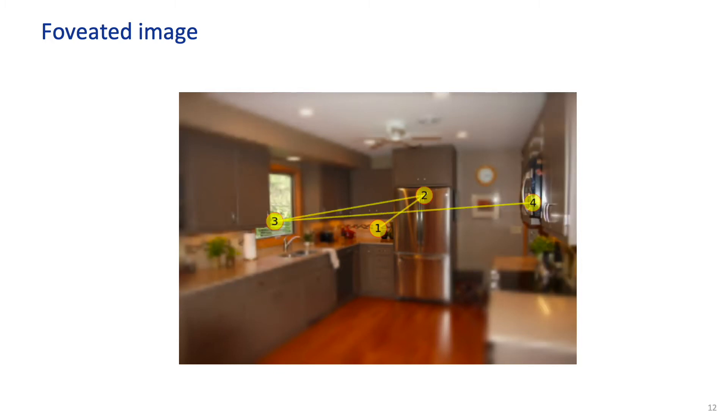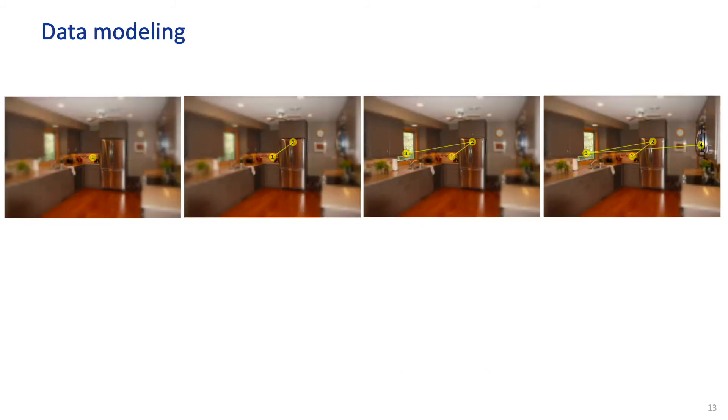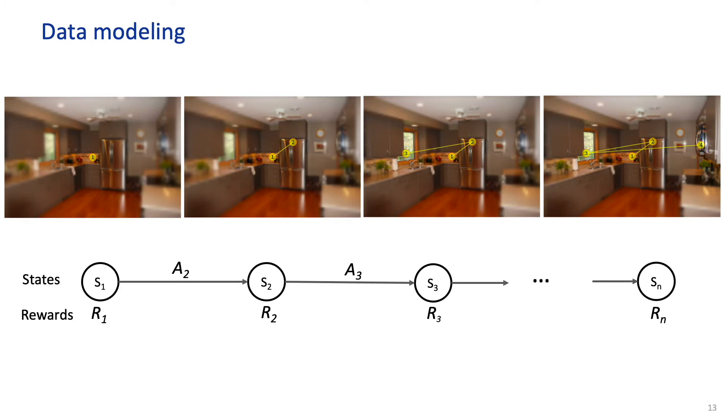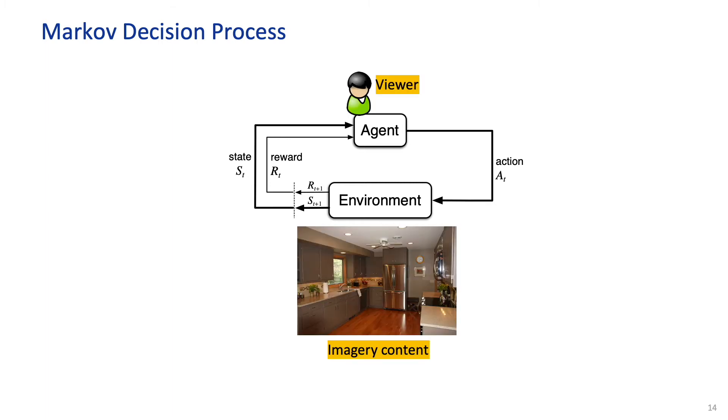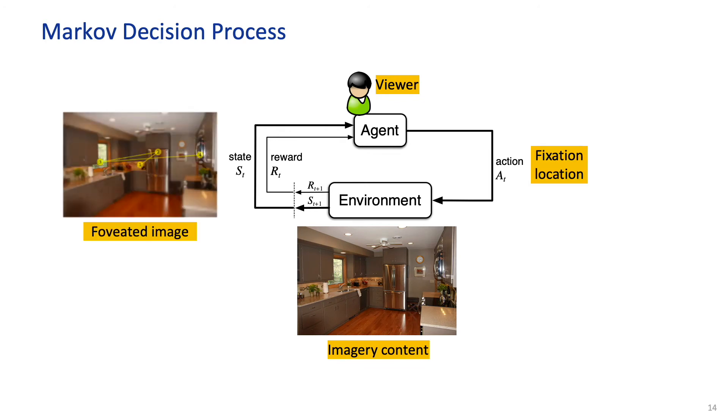To approximate human memory effects, we accumulate the de-blurrings across fixations. This process can be considered as a sequential decision process, where we have a sequence of states, actions, and rewards. Such decision process can be modeled as a Markov decision process, where the agent is the viewer, environment is the image, actions are the fixated locations, and states are the foveated images.